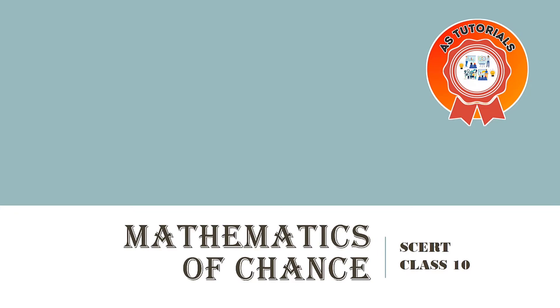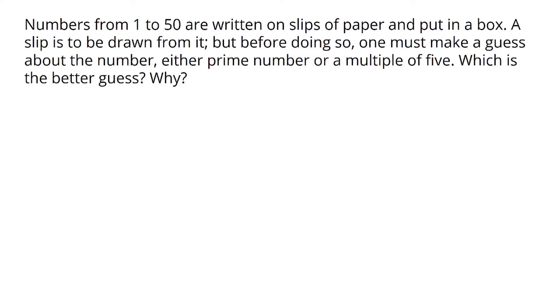Hi, welcome back to our class. Numbers from 1 to 50 are written on slips of paper and put in a box. A slip is to be drawn from it, but before doing so, one must make a guess about the number: either prime number or multiple of five. Which is the better guess? Why?